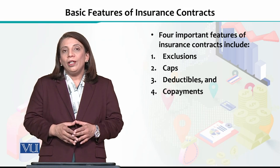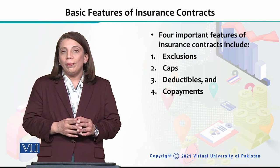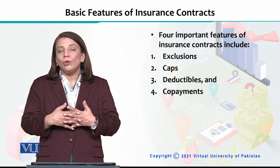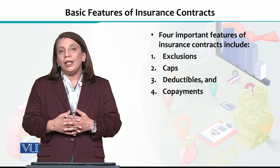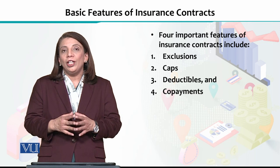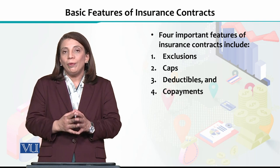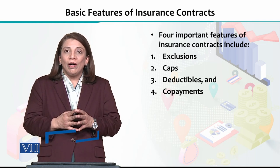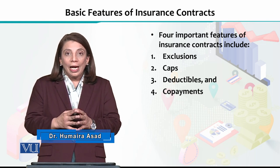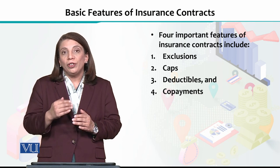In this section, I will be telling you about the four basic features of insurance contracts. We are talking about risk management — transferring risk to other parties — and that can be done by buying insurance. There are four important features related to insurance contracts that we need to understand: exclusions, caps, deductibles, and co-payments. I am going to explain these four features one by one.